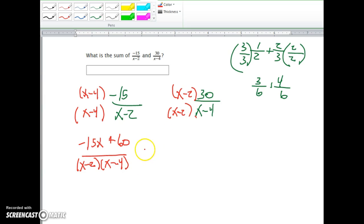Here we're going to end up adding these together. We have (30x-60) over (x-2)(x-4).